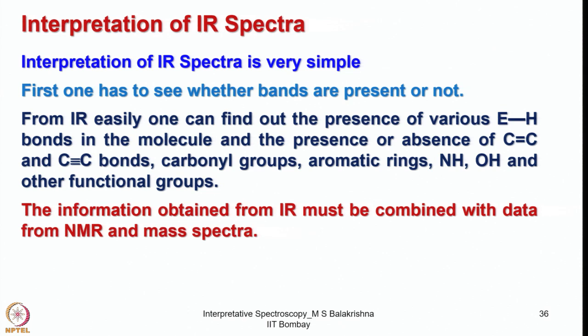How do we interpret data obtained from IR spectra? Interpretation of IR spectra is very easy compared to UV or NMR spectra. First, write down the structure of the molecule and identify the functional groups present. From an IR spectrum one can easily find out the presence of various E–H bonds, C=C, C≡C, carbonyl groups, aromatic rings, NH, OH, and other functional groups — most functional groups can be identified from recording an IR spectrum.